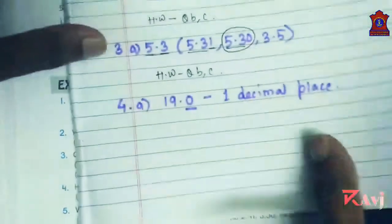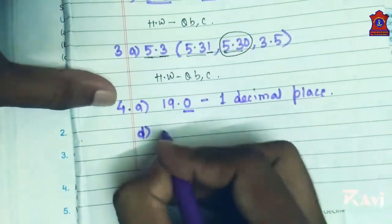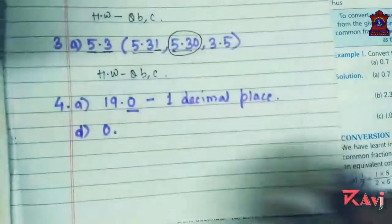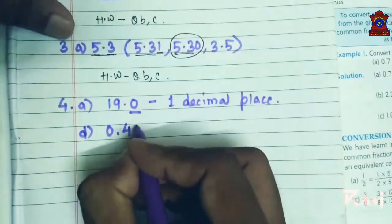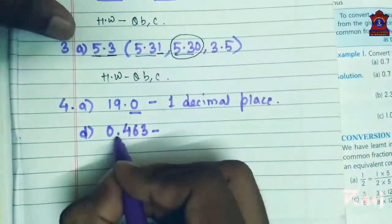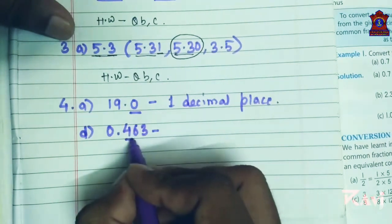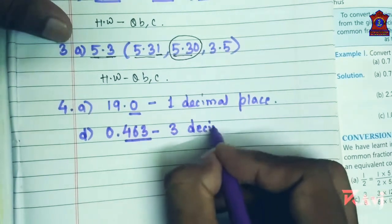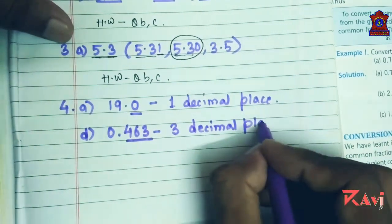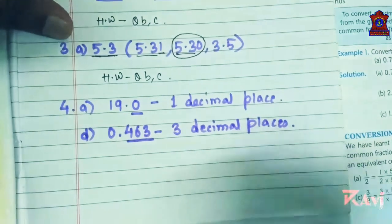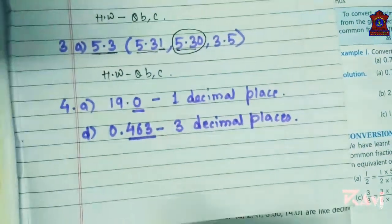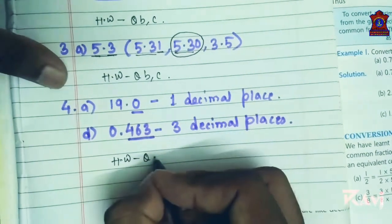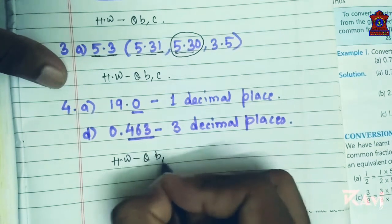Question D: 0.463 — after the decimal, how many digits are there? One, two, three — so three decimal places. The rest of the questions, B and C, you can do by yourself.